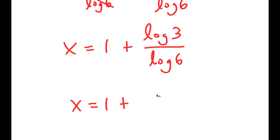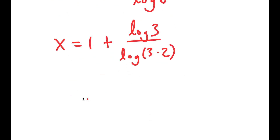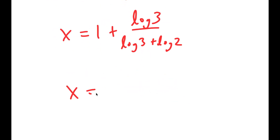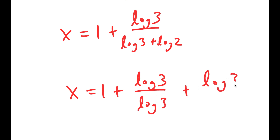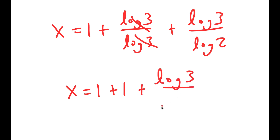Now this turns into 1 plus log 3 over log of 3 times 2, since I'm rewriting log 6 as log 3 times 2. So now this turns into 1 plus log 3 over log 3 plus log 2, which is equal to log 3 over log 3 plus log 3 over log 2. These two cancel out, so I get x is equal to 1 plus 1 plus log 3 over log 2.